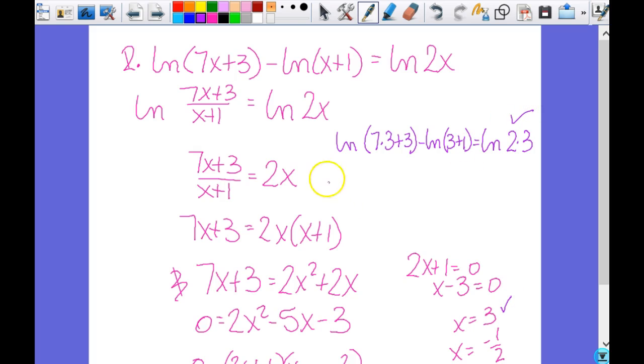Then I do the, so this one is good. So then I'm going to take the natural log of 7 times negative 1 half plus 3 minus the natural log of negative 1 half plus 1 equals the natural log of 2 times 3. So here, this is going to be a negative 3 half, negative 3.5 plus 3. So this is negative right here, right? This is positive, and this is negative. But even one negative is a bad thing, right? You can't take the natural log of a negative number. So that means this one doesn't work, so this is not one of my answers. So my answer is just 3.